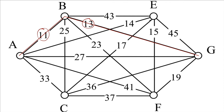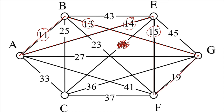The next smallest is 14 from A to E, then 15 from E to F. My next smallest is 17 from E to C, but that would give a degree 3 at E, so I can't do that — cross it off. Next smallest is 19 from F to G, but notice that if I include that it creates a circuit that does not include C, so we're not allowed to use that one either — cross that off too.